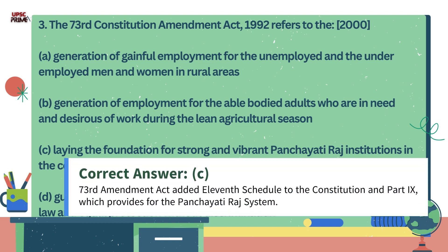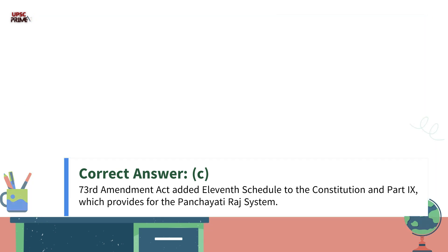The 73rd Amendment Act added the 11th Schedule to the Indian Constitution and Part 9 which provides for the Panchayati Raj system.